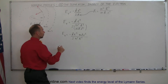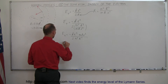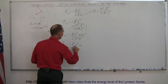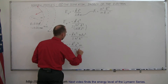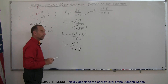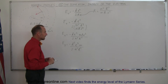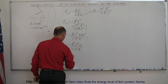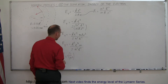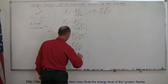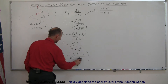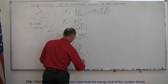We can simplify that a little bit. We have e squared and e squared, k and k, so E total is equal to minus k squared e to the fourth power times the mass divided by two times n squared h-bar squared. I'm going to pull out the n squared in the denominator because we want to make it a factor of the quantum number, so E total equals one over n squared times the remaining quantity: minus k squared e to the fourth times m divided by two h-bar squared.